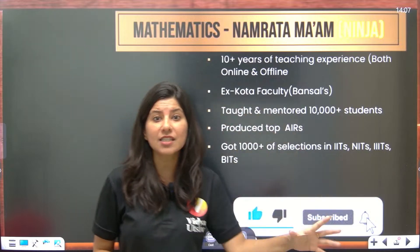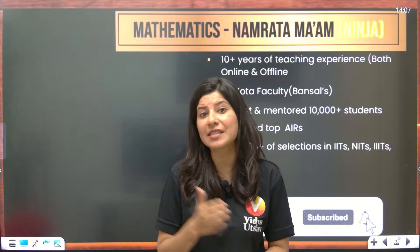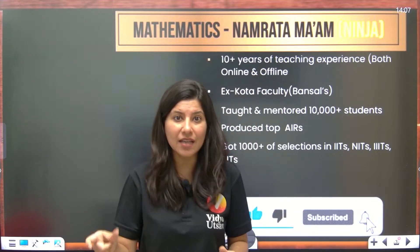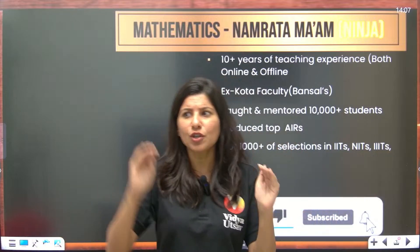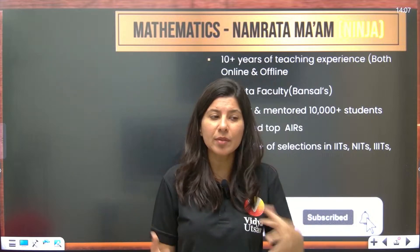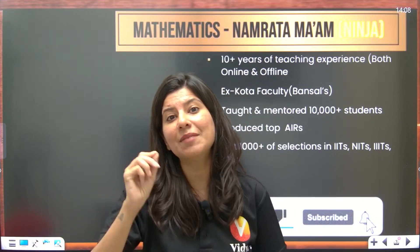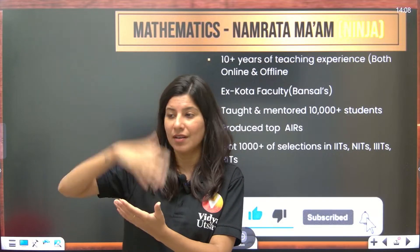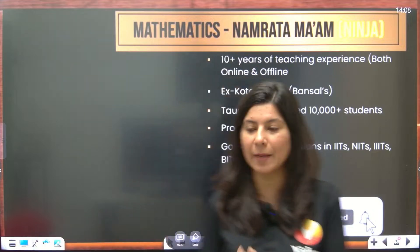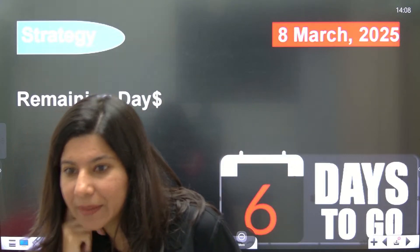If you feel the physics paper wasn't great and you want to fulfill the 75% attendance criteria, you now have a chance to make things right in the mathematics paper. Mathematics paper is not going to be very difficult — it should be at a moderate, doable, and easily scorable level. Physics was tough, so mathematics can be a balance. This is a great opportunity to score 80 on 80 in mathematics, which will ensure you get 75-plus percentage.